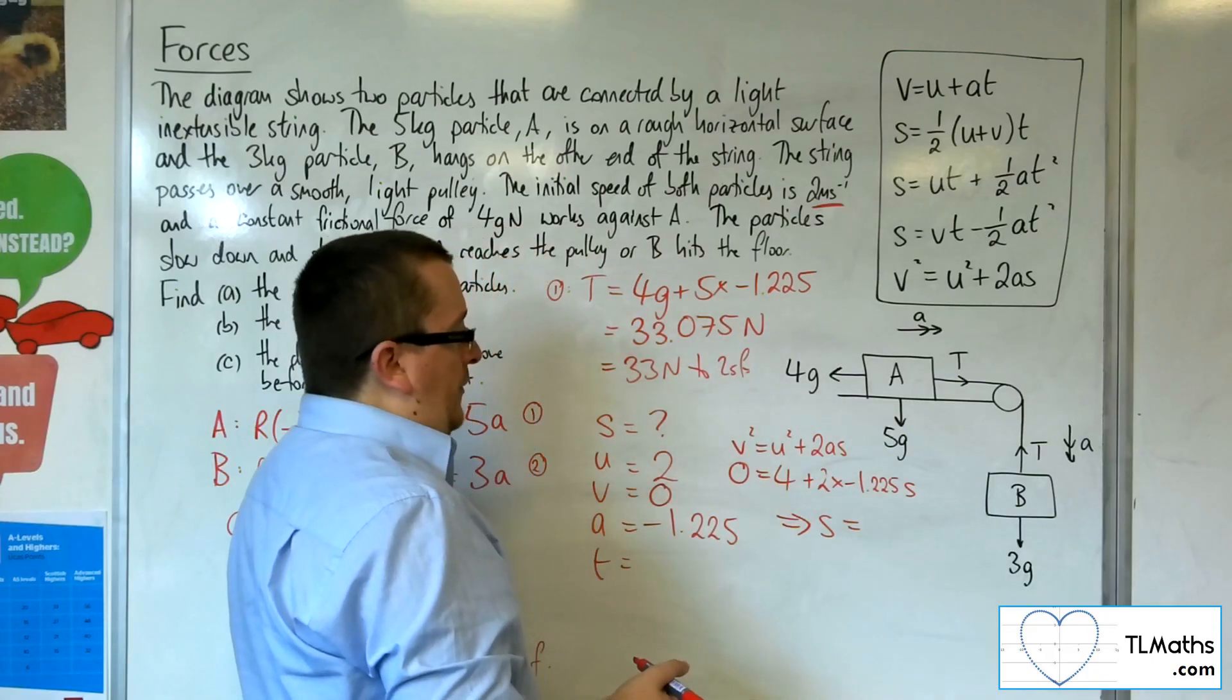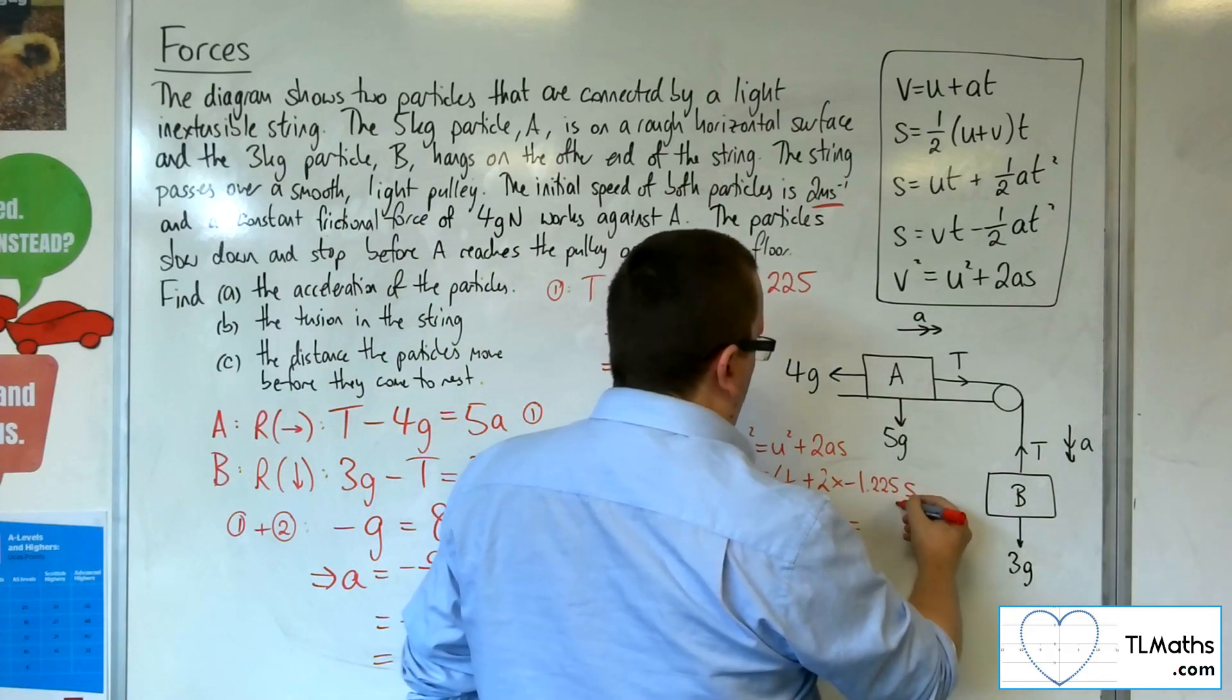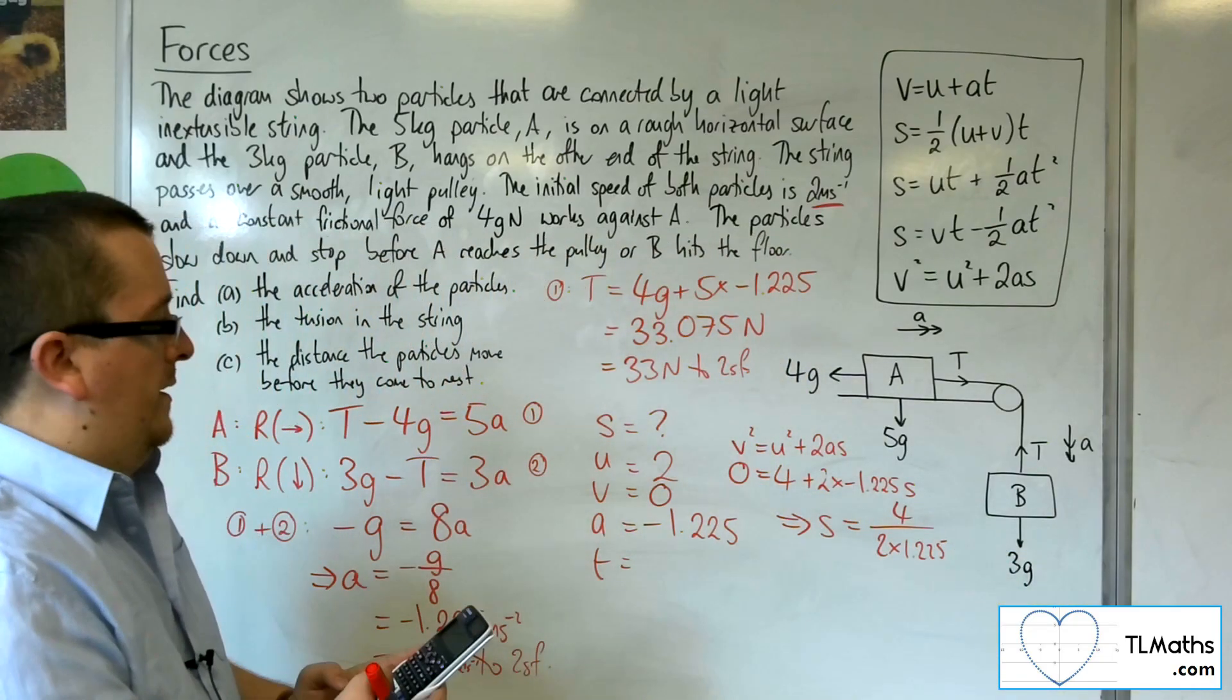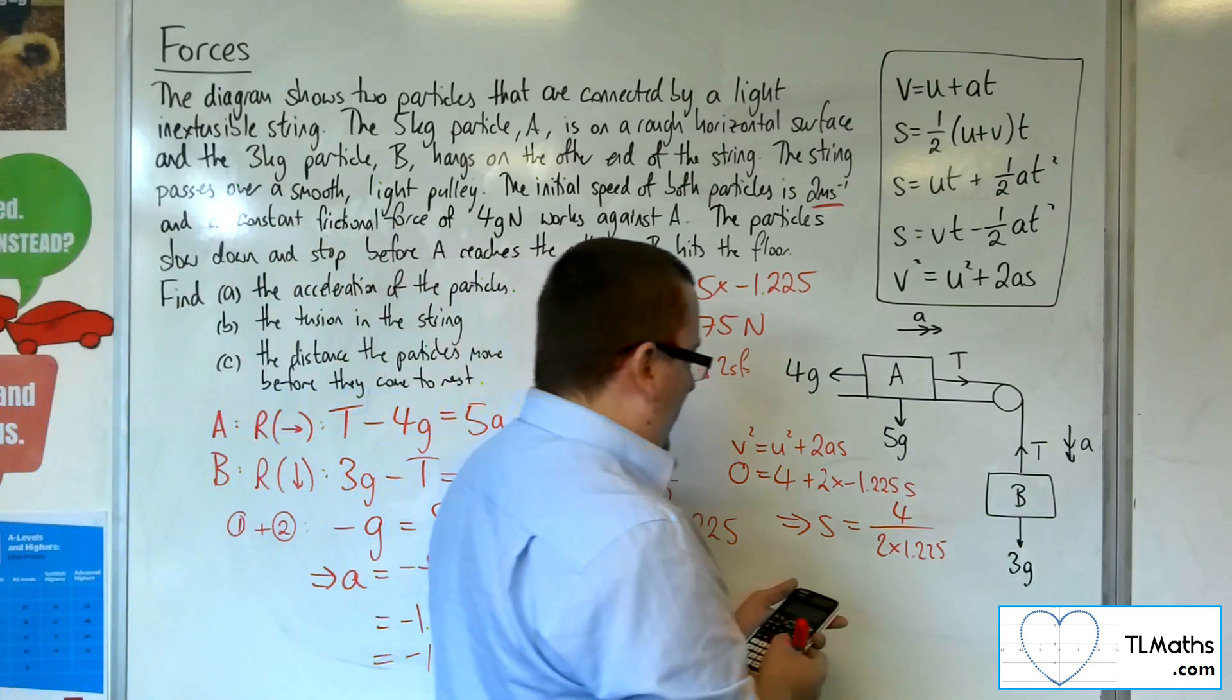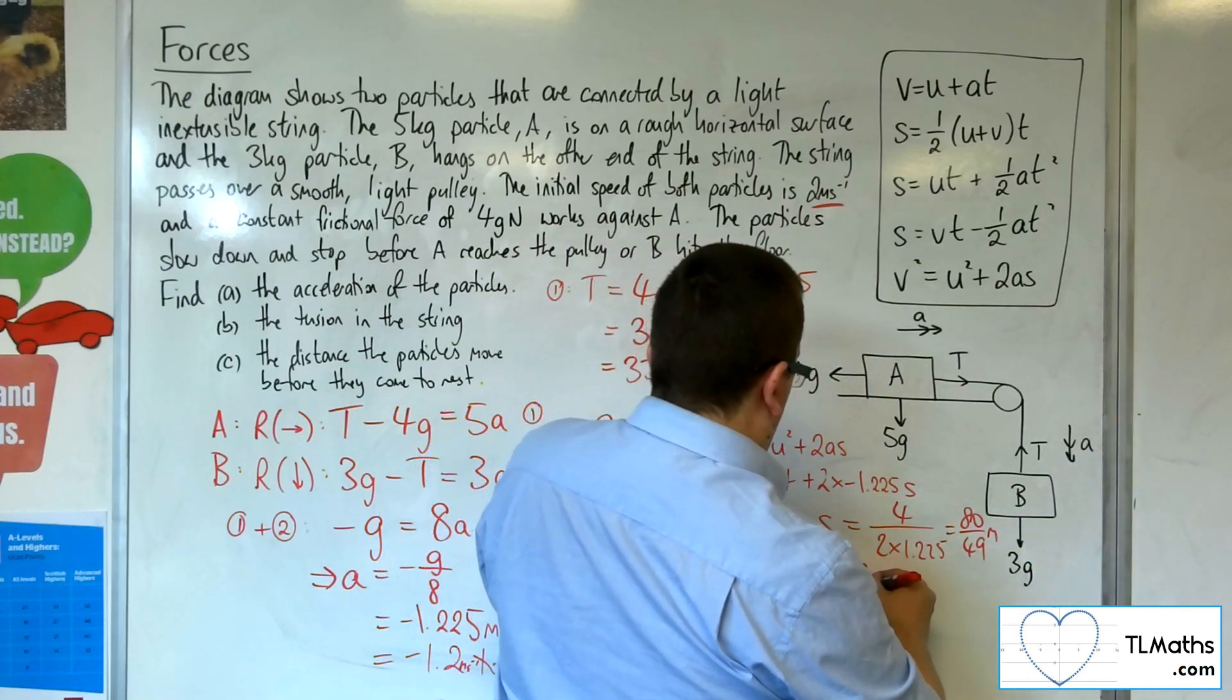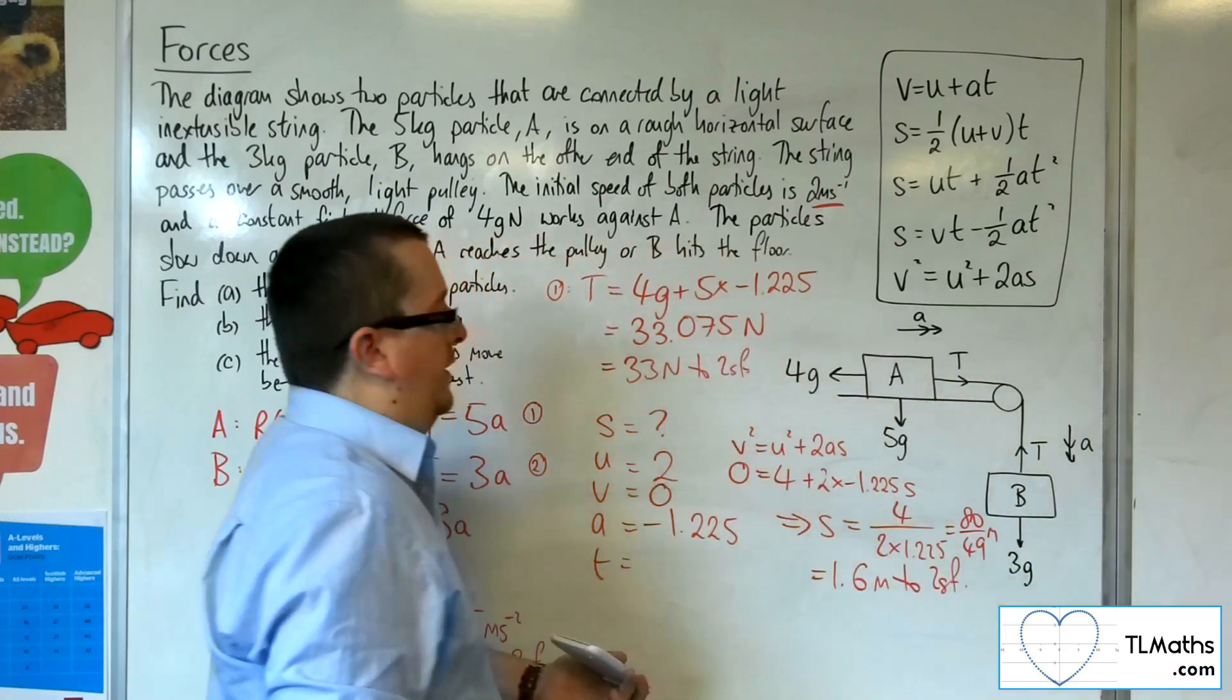Now if I rearrange that to get S equals, we're going to have, adding that onto both sides, so 4 over 2 lots of 1.225. So 4 over 2 lots of 1.225, and that gets me 80 over 49, which is metres, which is 1.6 metres to two significant figures.